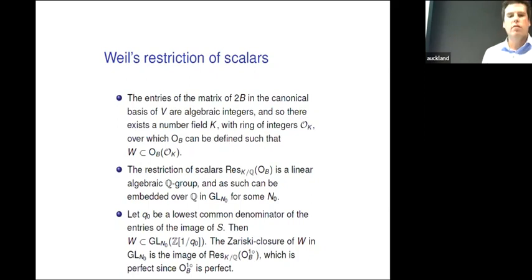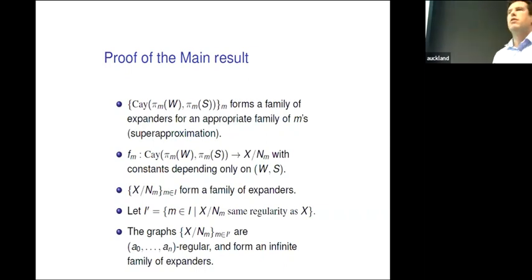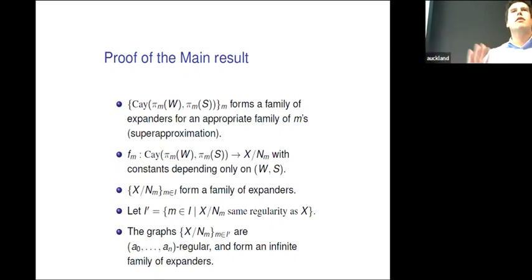So how do we prove the main results in summary? The Cayley graphs by W_S form a family of expanders for an appropriate family of normal subgroups. We had our quasi-isometries from the Cayley graphs to the one-skeletons quotiented by these subgroups, and these constants only depend on W_S. Then by the transfer result — if one family is expanding then the other one is — we get expansion on the skeleton side. And this I' ensures I kicked out all the bad ones, so regularity is fine. So that proves the result: I get regularity and the graphs form an infinite family of expanders.